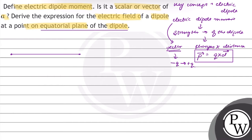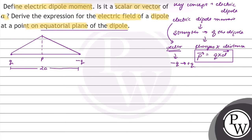Suppose two charges, Q and minus Q, are separated by a distance 2a, and they form a dipole. We will find the electric field at the equatorial plane. The plus Q charge gives an electric field in one direction as shown, and the minus Q charge gives an electric field in another direction. The net electric field will be in the direction as shown, and the electric field at point P makes an angle theta.